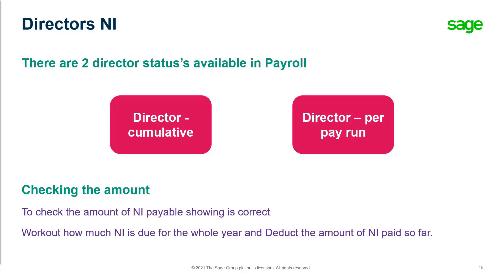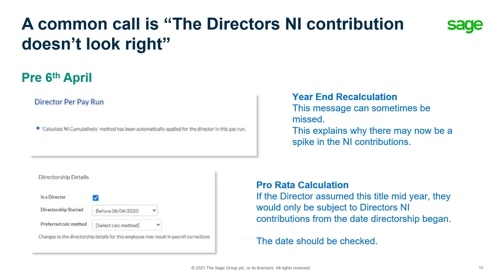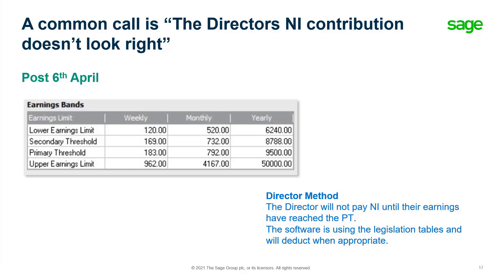To check the amount of NI payable is showing correctly, work out how much national insurance is due for the whole year and deduct the amount of NI paid so far. If the director has only been a director for part of the year, the theory is the same, but you work out how much NI is due using the pro rata table from the CA44 booklet. A common technical support call is that the director's NI contribution doesn't look right — this can be due to a year-end recalculation that has been missed, a pro rata calculation based on when the directorship began, or the fact that the director will not pay NI until earnings have reached the primary threshold. The software uses the legislation tables and will deduct when appropriate.